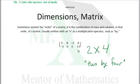This matrix would have dimensions or order of two by four. That's what we call it: a two by four matrix — two rows and four columns.